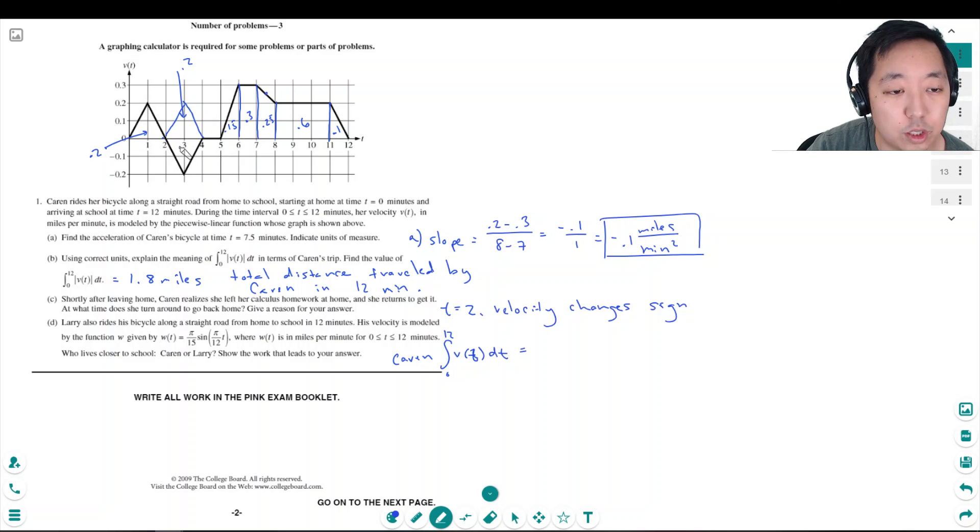See, I need to exclude these 0.4, this 0.2 and this 0.2, because she kind of like traveled 0.2 miles and turned around and traveled 0.2 miles back. So this is not really...